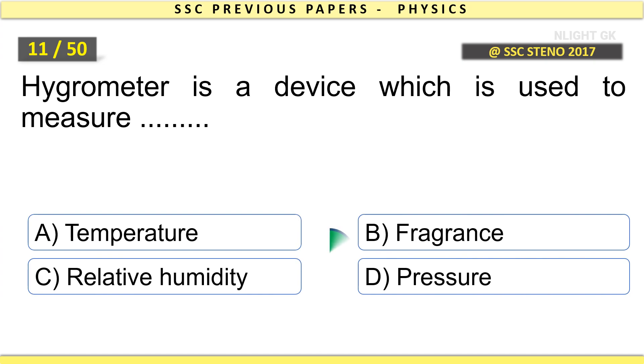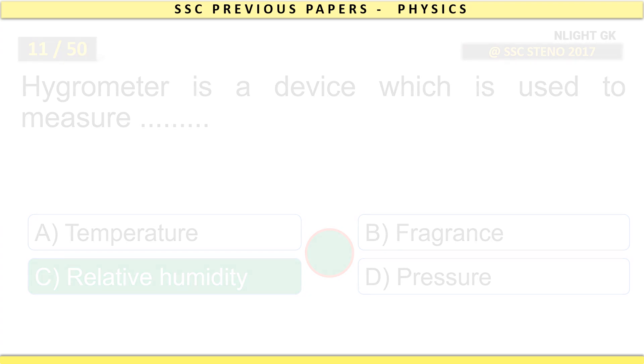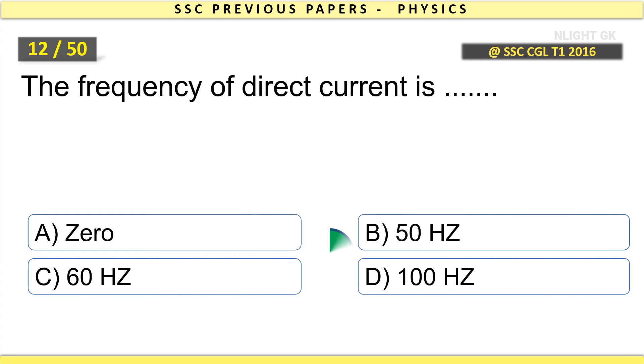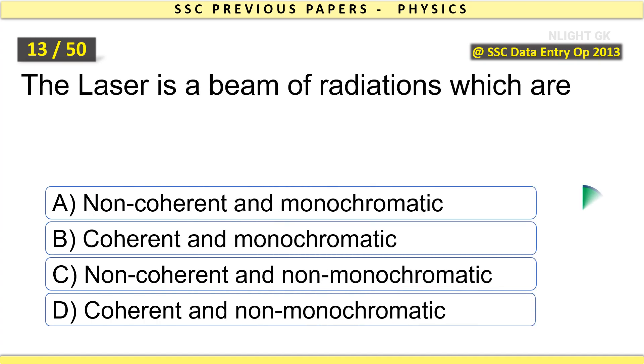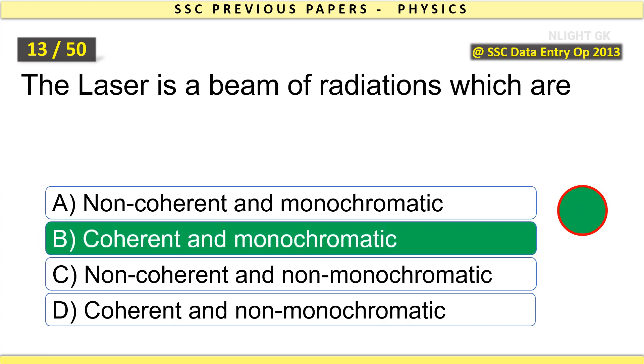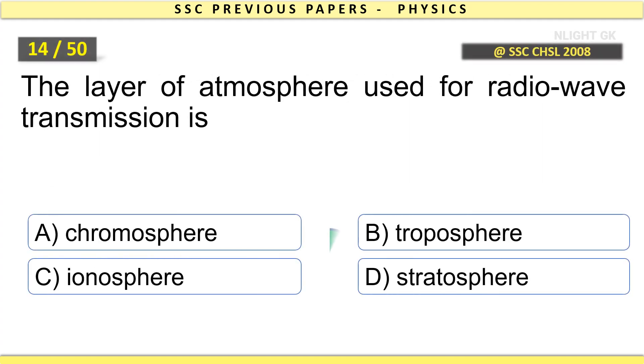Hygrometer is a device which is used to measure relative humidity. The frequency of direct current is zero. The laser is a beam of radiations which are coherent and monochromatic. The layer of atmosphere used for radio wave transmission is ionosphere.